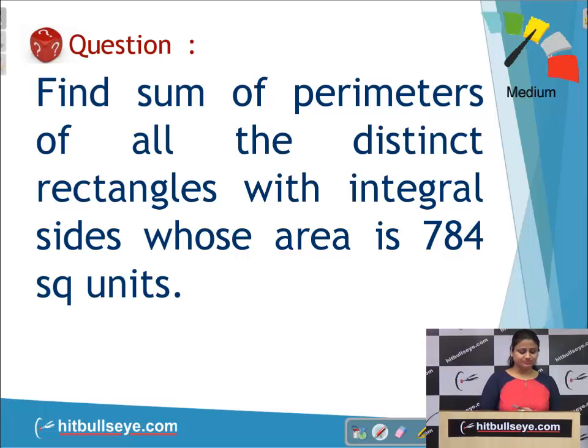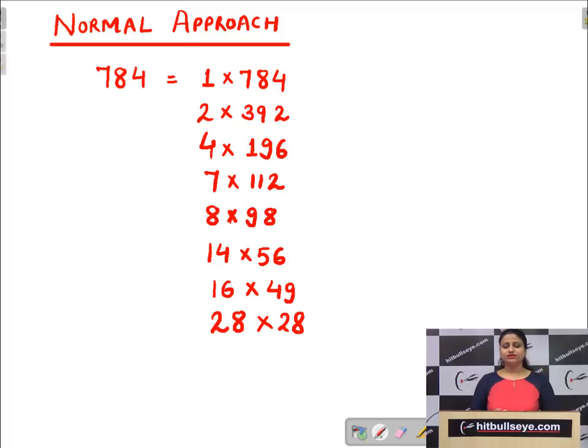So what is your conventional approach? That is the normal approach. First of all you will take 784. Since 784 can be written as 1 into 784, it means this is a possible rectangle, that is L into B. Then you will write down the second possibility that is 2 into 392 and so on. There are numerous cases.